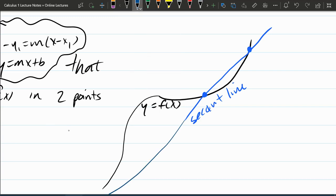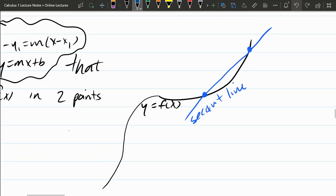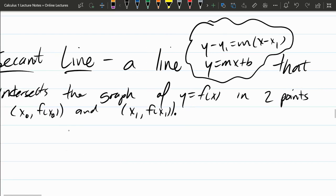But generally it just intersects in two points. There could be other points where it might intersect somewhere over here. They could cross again, that's fine. But it does need to intersect in two specific points. And that will usually be given to you in the problem.